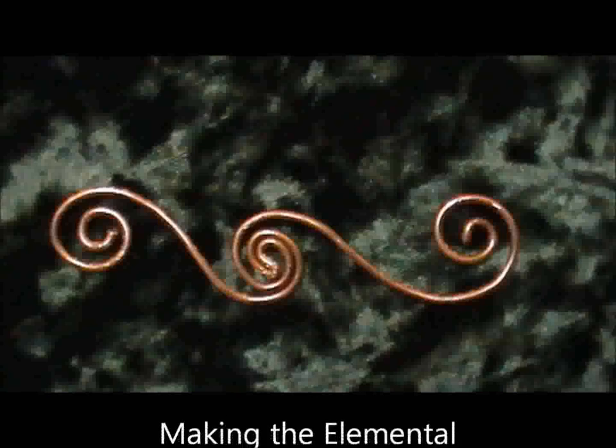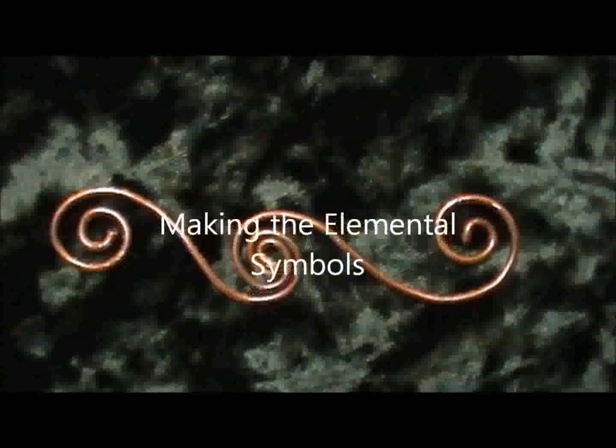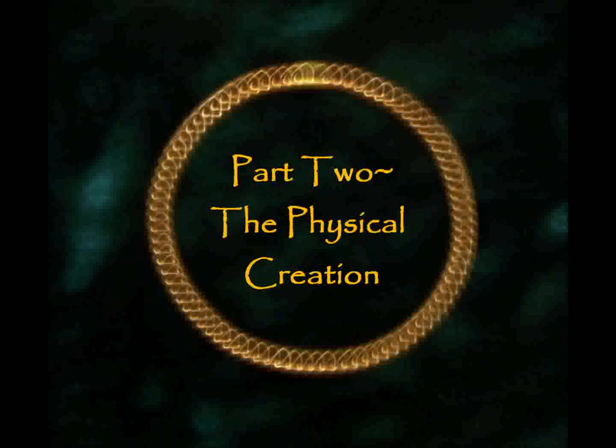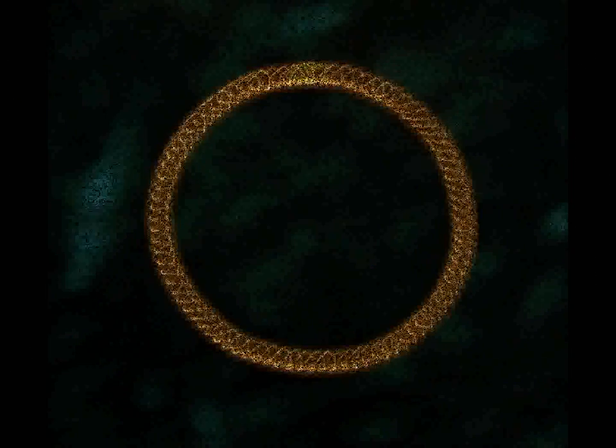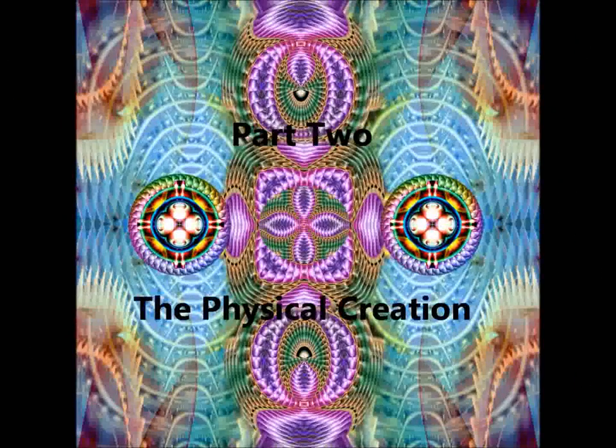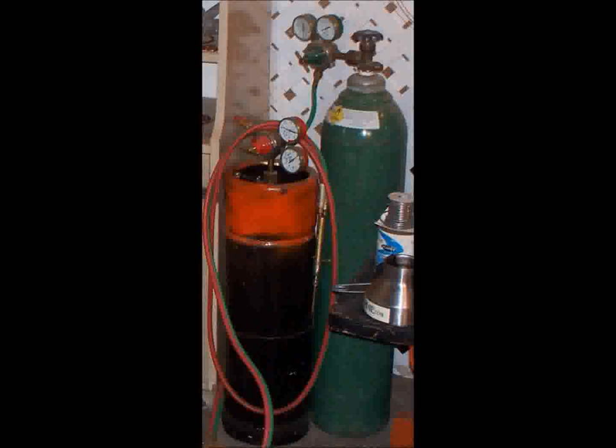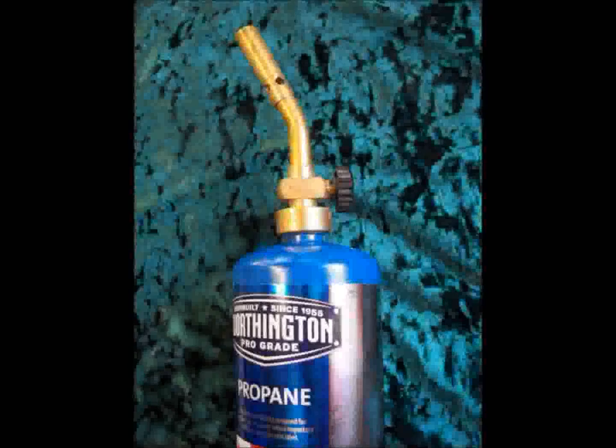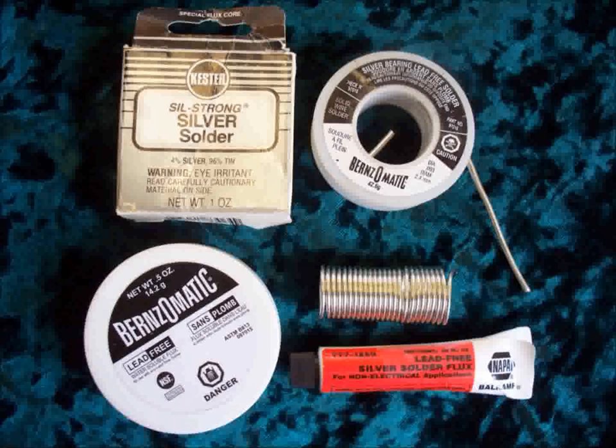And I've added a bonus at the end of this video, which is called Making the Elementals. Part 2, the physical creation of the ring. For those of you who do not have access to acetylene and oxygen, we are going to start as I started, and that is with a simple propane torch and silver bearing solder.